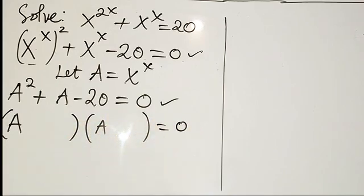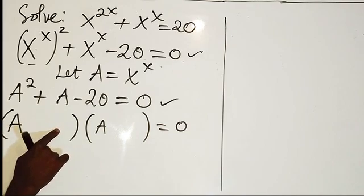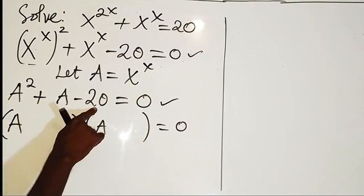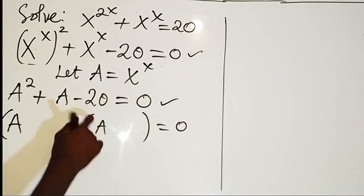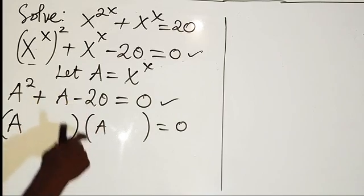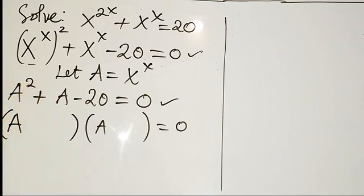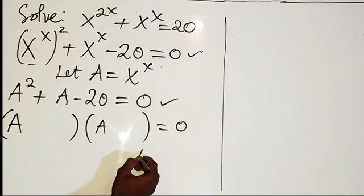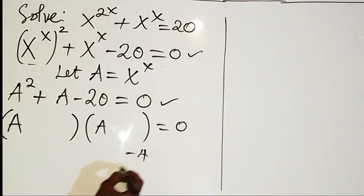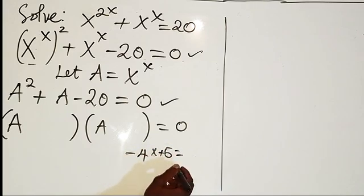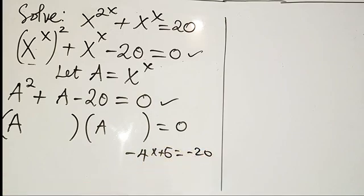So now we are required to get what will be here and what will be here. So now by looking for the two factors of minus 20 that when you multiply them together will actually give us minus 20. So therefore let's do this: if you have minus 4 times 5, you can see that we are going to have minus 20.